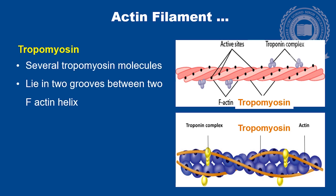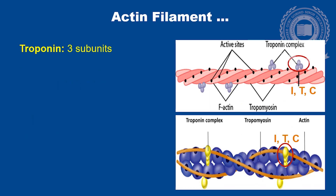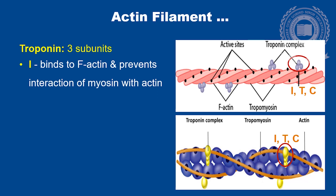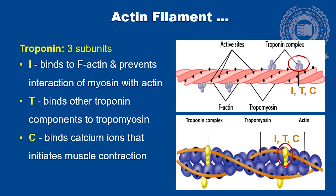Tropomyosin is composed of several tropomyosin molecules. They lie in grooves between the two F-actin helix and cover the active sites on F-actin helix, which are represented by the dark dots on the actin molecules, and prevent the interaction with myosin. The third component of actin filament is troponin, which consists of three subunits: I, T, and C. Troponin I binds to F-actin and prevents interaction of myosin with actin. Troponin T binds other troponin components to tropomyosin. Troponin C binds calcium ions that initiates muscle contraction.